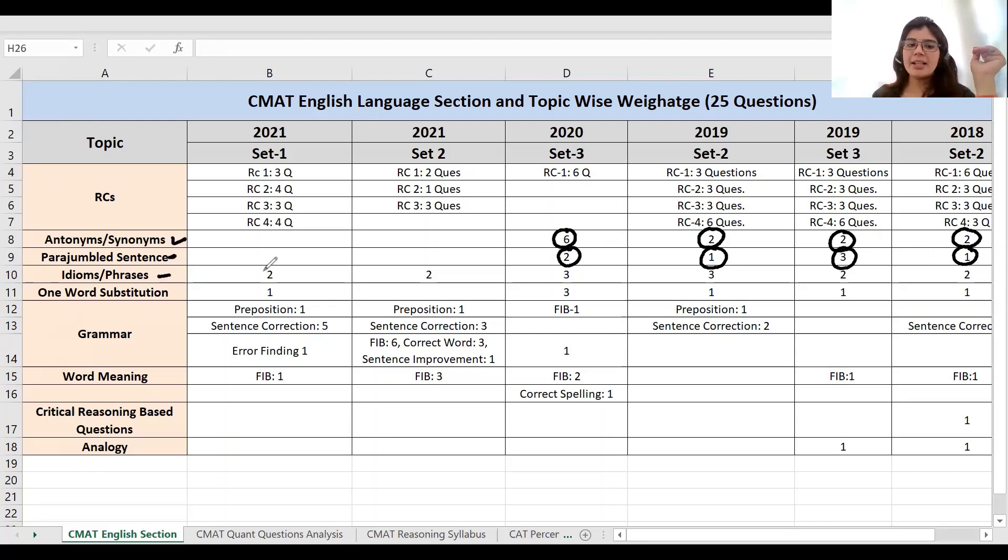For idiom phrases, here see, in 2021 there are two idiom phrases, here there are two. In 2020 there are three idiom phrases, here there are three, here there are two. That means two to three idiom phrases you have asked in every set. If you see one word substitution, then one word substitution here, here, here, that means one, two, three, one word substitution.